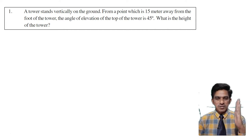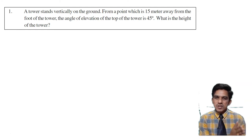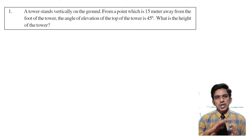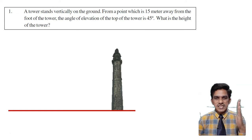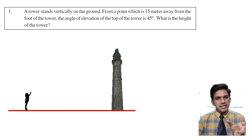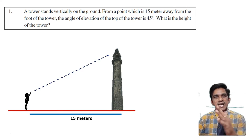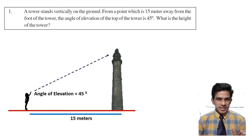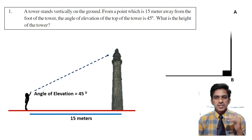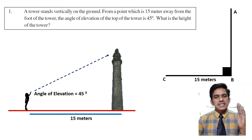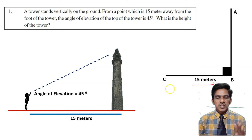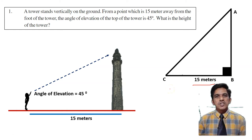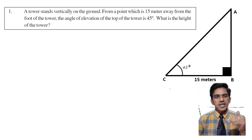The problem involves a tower and an observer. The distance between the foot of the tower and the observer is 15 meters, and you have to find the height of the tower. Consider this as a tower and this girl as the observer. The distance between them on the ground is 15 meters and the angle of elevation is 45 degrees. Let us draw a linear diagram for this. This is a level ground. AB is the height of the tower. C is the observer, and the distance between the observer and the foot of the tower is 15 meters. The angle of elevation of the top of the tower is 45 degrees.